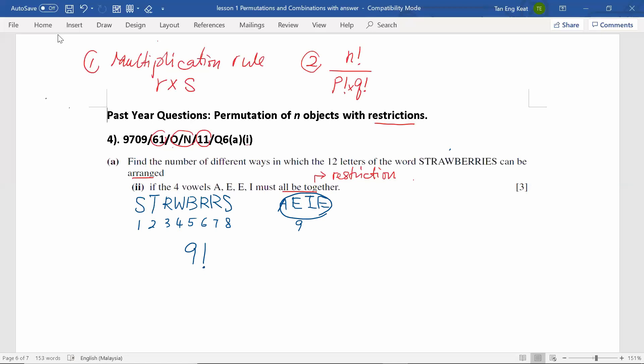And for the four vowels, when we treat these four vowels as a big object, these four vowels can still arrange among themselves. One, two, three, four. So it has four factorial ways for them to arrange among themselves. And based on the multiplication rule, to find the total ways, we multiply them together.